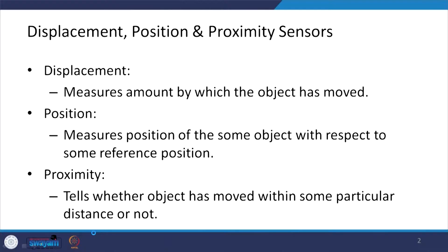Coming to displacement, position, and proximity sensors, let us first see the difference between the three. Displacement measures the amount by which an object has moved. Position gives the location of some object described with respect to some reference point. Proximity basically gives you the nearness or farness — that is, it tells whether an object has moved within some particular distance or not. So all three are related with movement.